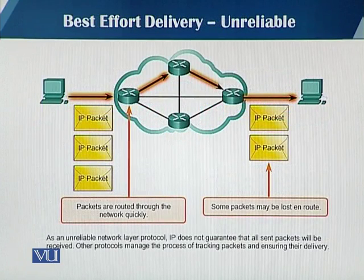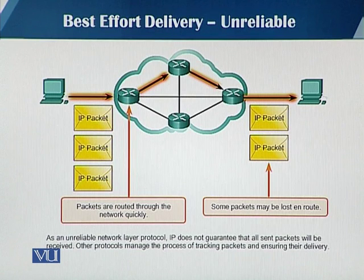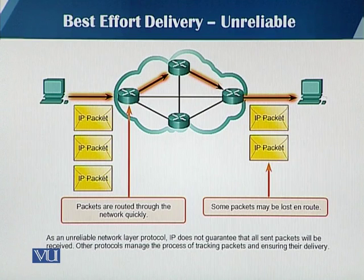As mentioned earlier, IP basically provides best effort delivery, which means it's unreliable. Packets are routed through the network quickly without any guarantees, and it is possible that some packets reach the destination and some packets don't. Also, the paths are not fixed, which means it is possible that some packets take different paths than previous packets that have already reached the destination.